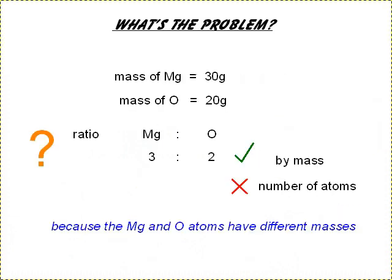So what's the problem? We can imagine that we've done an experiment and 30 grams of magnesium reacted with 20 grams of oxygen. I'm trying to work out the formula, and you might go that the ratio of magnesium to oxygen is 3 to 2, because of the 30 to 20. Well, that's correct by mass, but it's not correct in terms of the number of atoms, and that's because the magnesium and oxygen atoms have different masses.